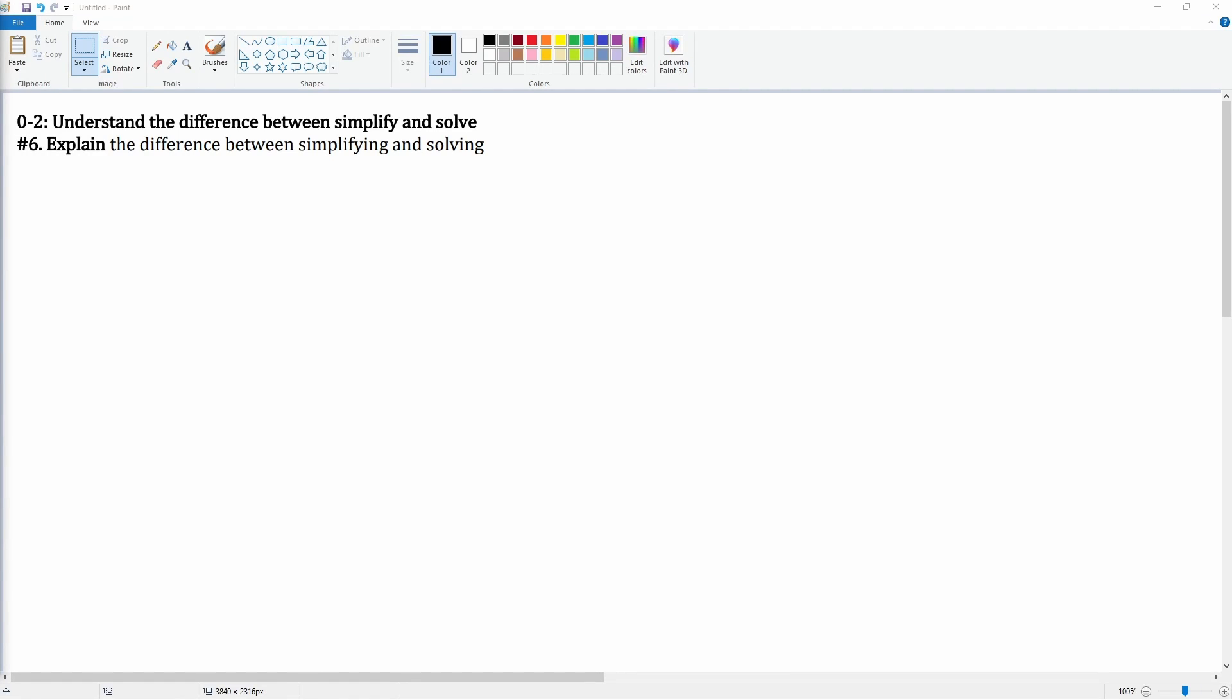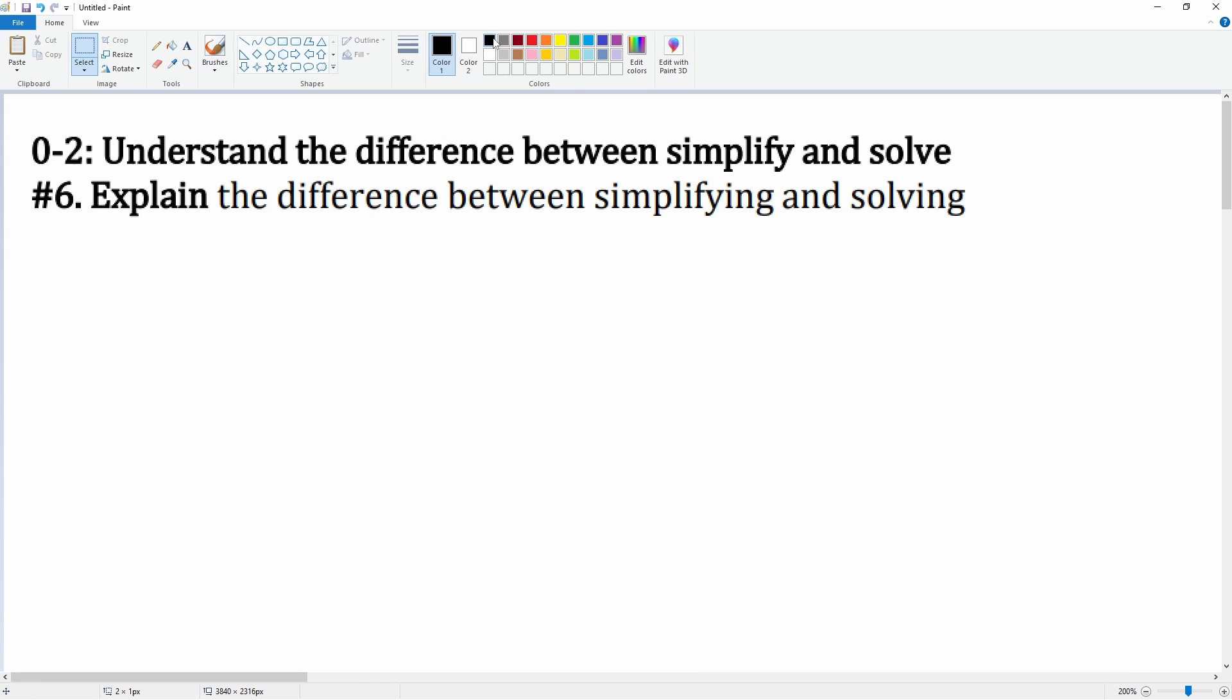Let's understand the difference between simplifying and solving. Simplifying looks something like this: 2x plus 4x plus 6. Solving can look something like 2x plus 4x plus 6 is equal to, let's say, 20. This is considered to be an expression because there is no equal sign. This is considered to be an equation because there is an equal sign.